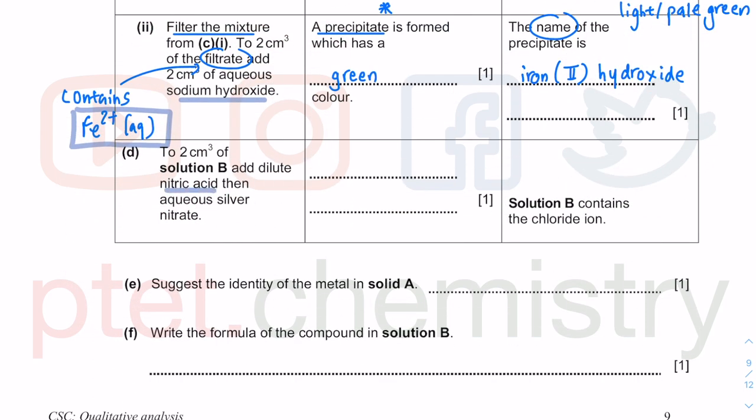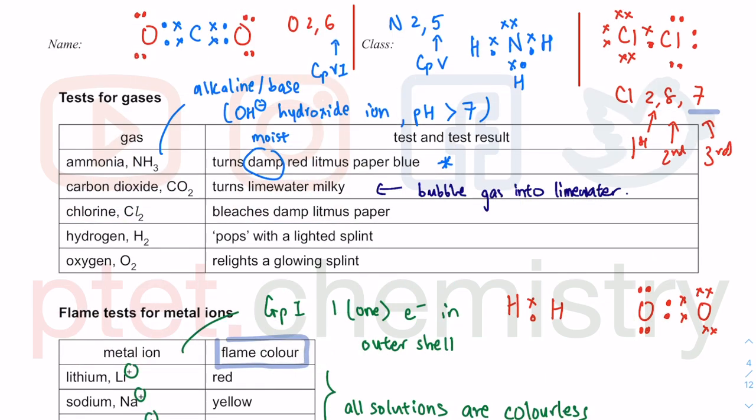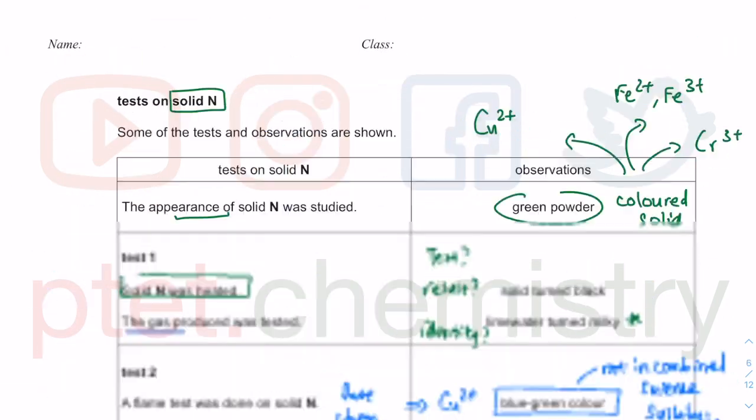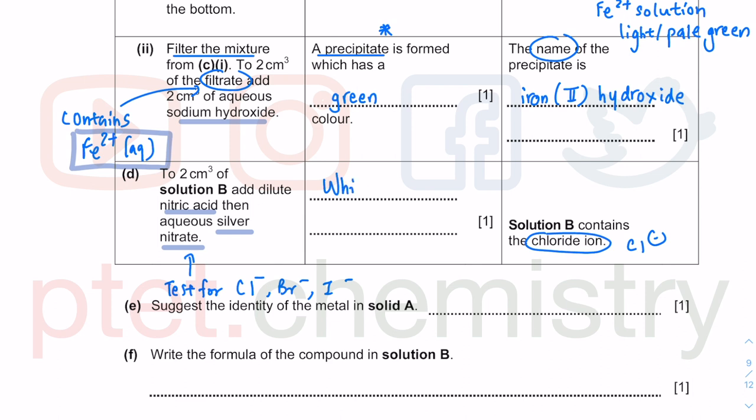In this next test we add nitric acid and silver nitrate. Silver nitrate is basically the test for halides: chloride, bromide, and iodide. We have chloride Cl minus. When we add silver nitrate solution, we get white precipitate. In the theory paper, you are not allowed to write PPT. The spelling for precipitate is P-R-E-C-I-P-I-T-A-T-E. It takes a bit of practice.